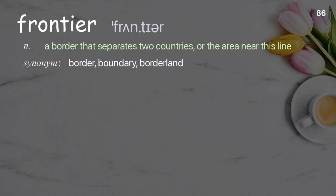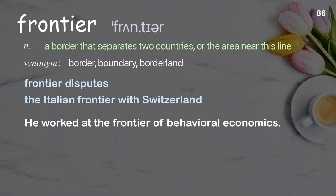Frontier: a border that separates two countries or the area near this line. Examples: frontier disputes. The Italian frontier was Switzerland. He worked at the frontier of behavioral economics.